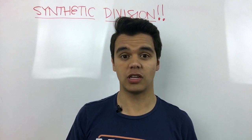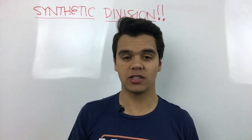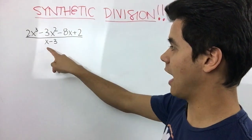Synthetic division is just taking a polynomial and dividing it by x minus c, where c is just any number. For our example, we're going to divide this polynomial by x minus 3.